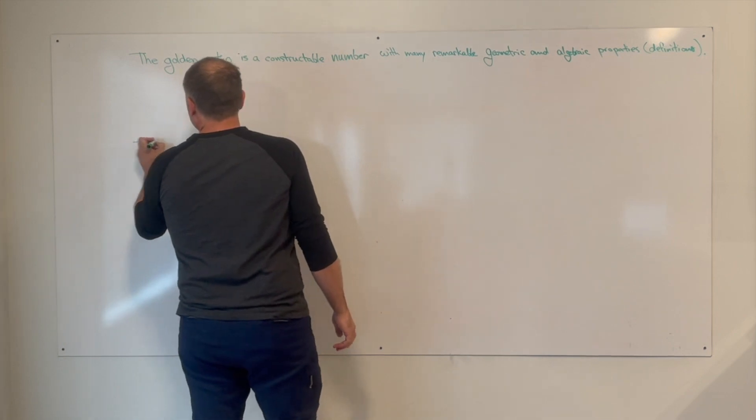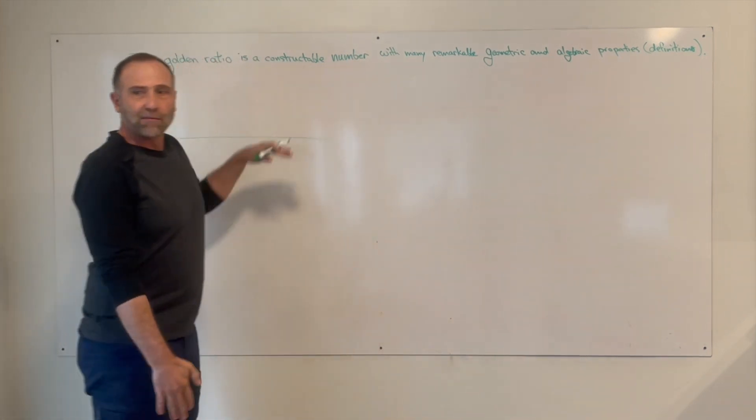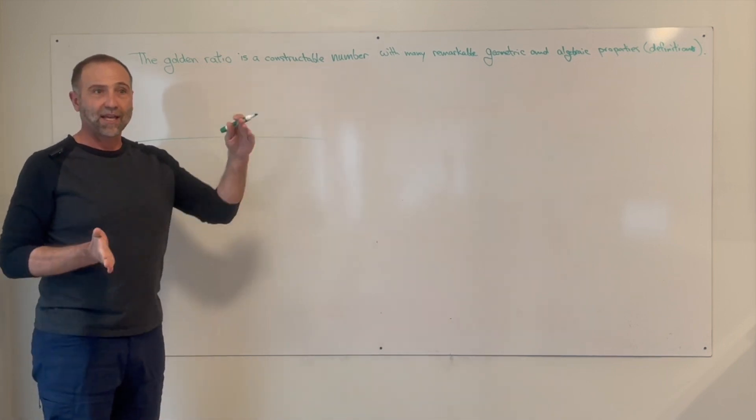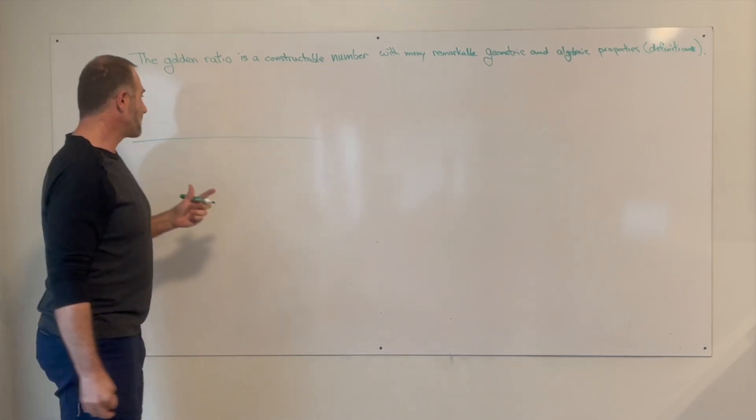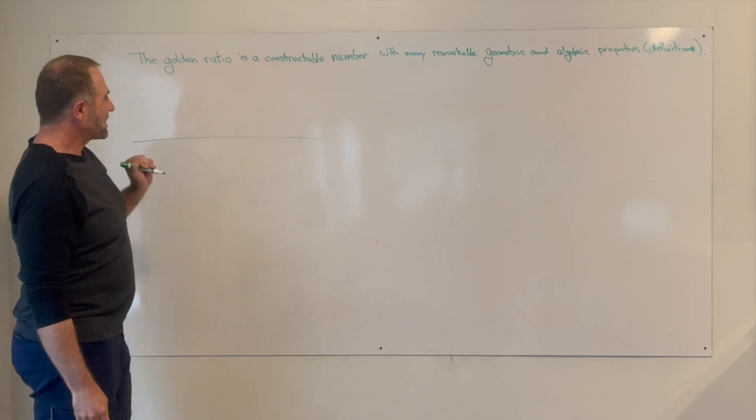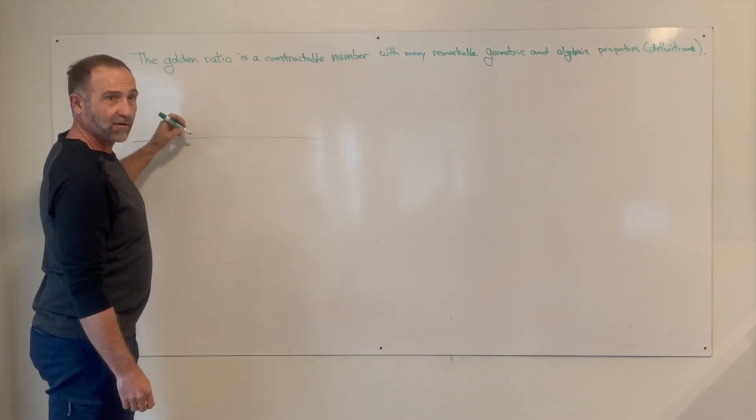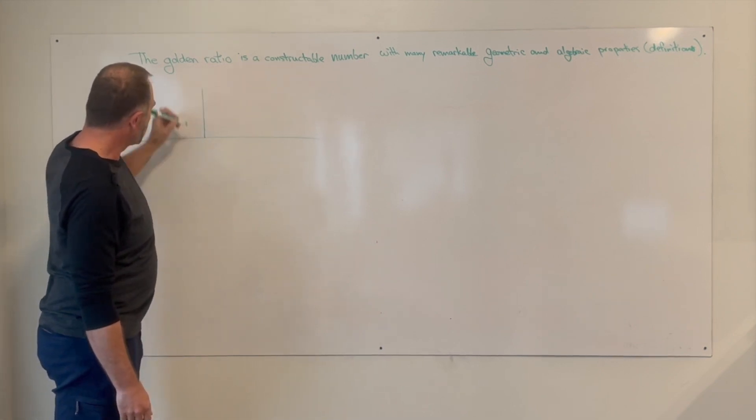Say you have an x-axis or a tabletop. And you have three sticks that are straight and unit length. So length of one, whatever unit it is. You take the first stick and you put it perpendicular to your tabletop, right? Stand it straight up. Its length is one and it's at 90 degrees.